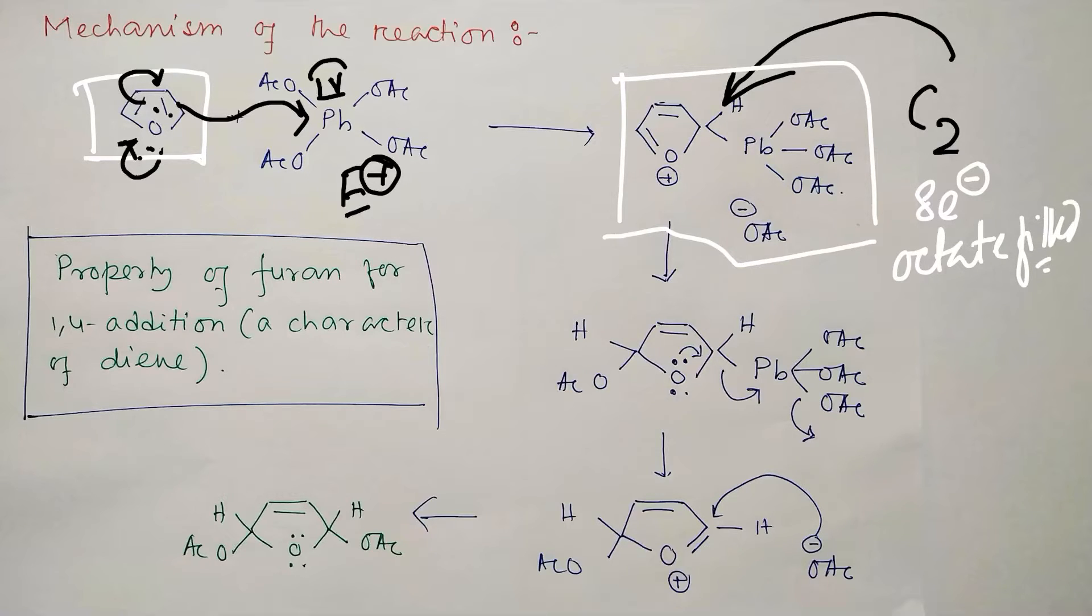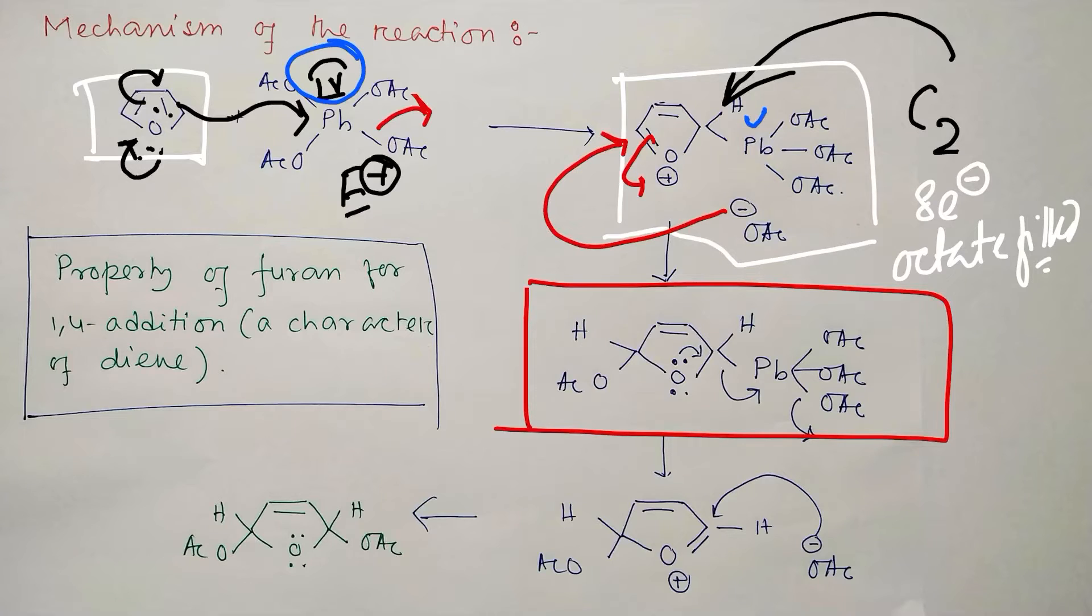So now next what happens? After attack on this lead center, one acetate eliminates because lead is tetra-coordinated and this acetate further attacks here. So it opens up and becomes a neutral species as it is. In the next step, what happens? Because as we told that still, look at lead: previously it was +4, in this case it is +4, and in this situation also +4. But lead has a tendency to get reduced and that is the driving force for this step. This oxygen pushes this lone pair and the bond pair means carbon-lead bond pair goes to lead because lead likes to have electron due to inert pair effect.